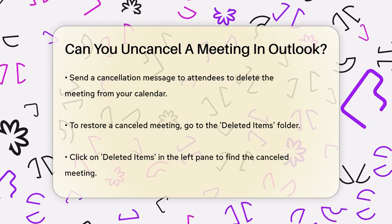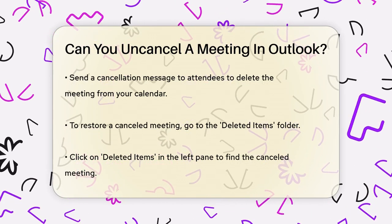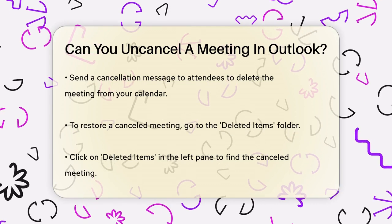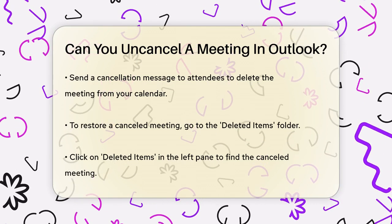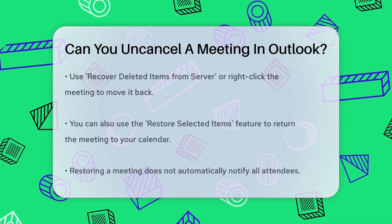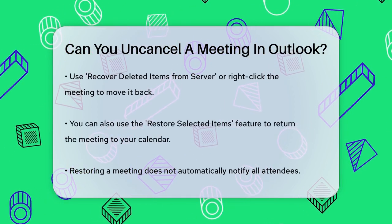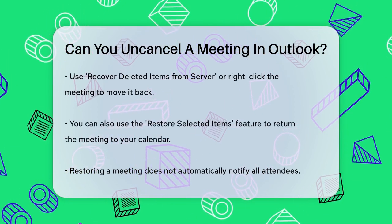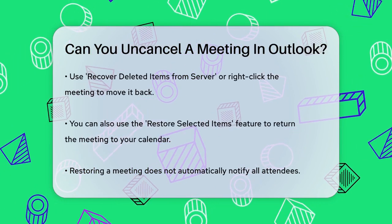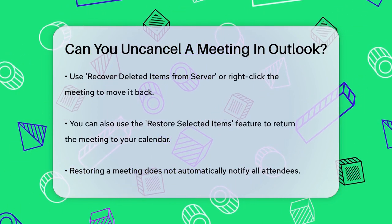or simply right-click the meeting, hover over Move, and choose Calendar to move it back to your calendar. Another way to restore the meeting is by using the Restore Selected Items feature. After locating the meeting in the Deleted Items folder, select it and click on Restore Selected Items. This will place the meeting back into your calendar.